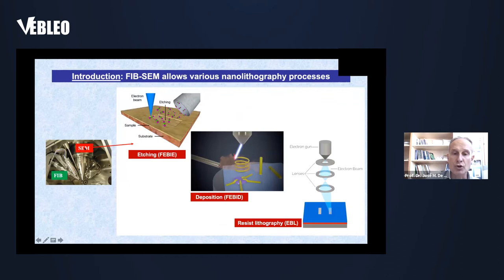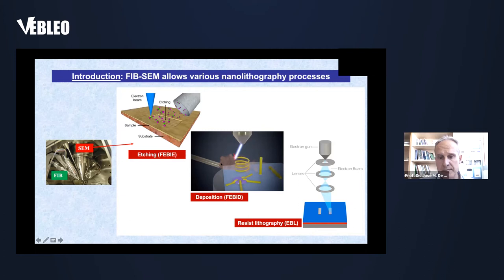The scanning electron microscope can be used not only for imaging but also for patterning. When used with an etching precursor gas, the electron beam patterns materials directly by removing material — this is called focused electron beam induced etching. If the precursor is of another type, materials can be grown — focused electron beam induced deposition — producing two-dimensional or three-dimensional materials. Of course it can also be used for electron beam lithography, as shown in the previous animation.